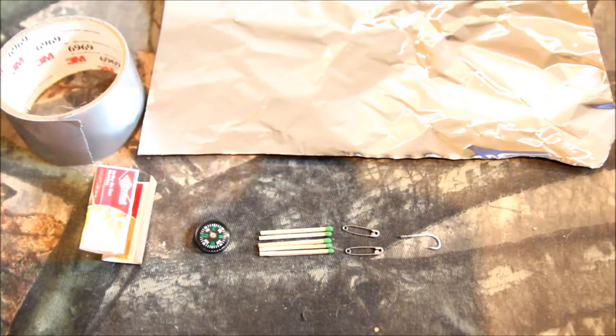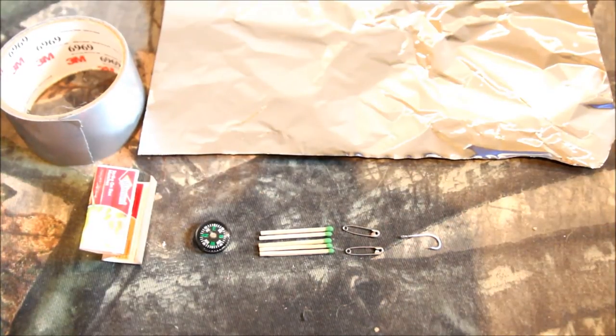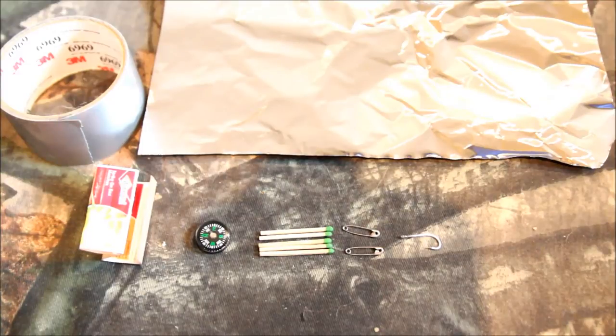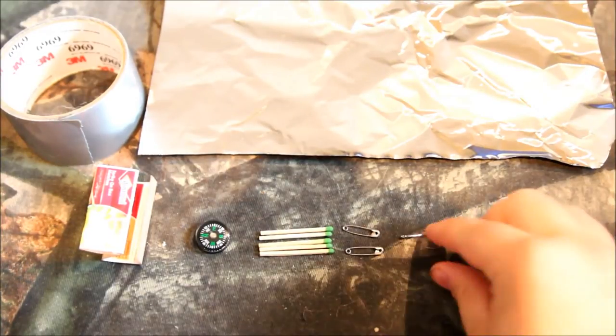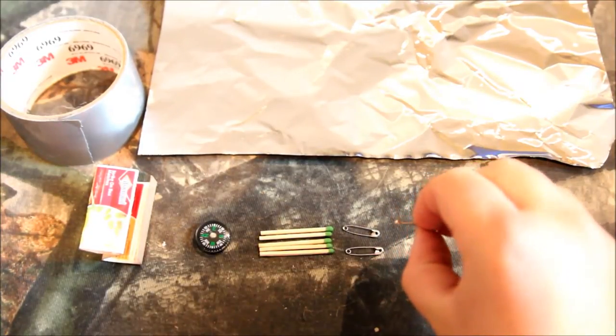This will be wrapped with paracord and you can use the inner strands of the paracord for fishing line. They will fit through the little hole at the end of the hook.